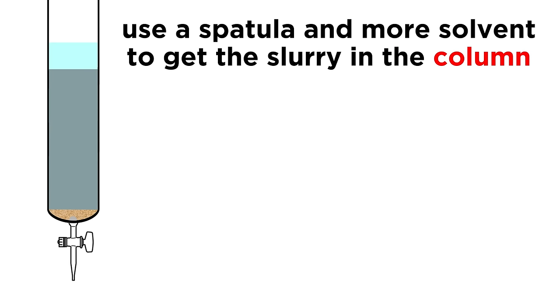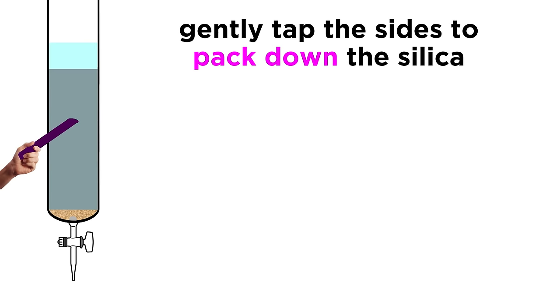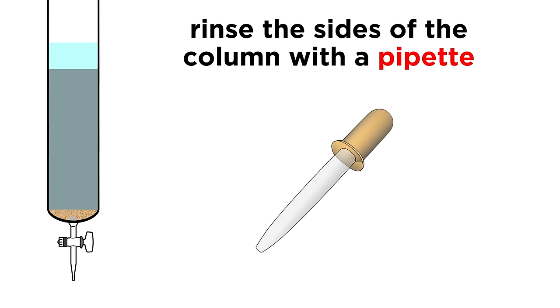It's a little tricky, but use a spatula to get it in the column, adding more solvent to the beaker as you go if necessary. Use something to tap gently on the side of the column until all the silica settles at the bottom, and use a pipette to rinse the sides with eluent to make sure it all gets down there.